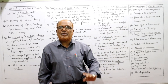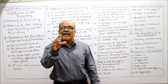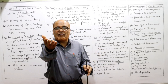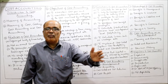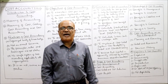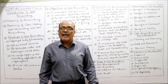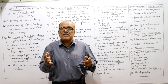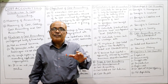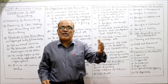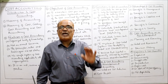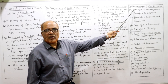Cost accounting helps management fix the selling price, locate areas of wastage of resources, and improve efficiency by removing wastage. It also helps in planning through budgetary control, and in preparing quotations and tenders — before giving a quotation, management must ensure profitability, and cost accounting helps fix quotations carefully. There are many advantages of cost accounting to management.